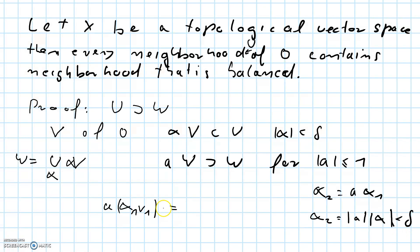And this proves that this element a times alpha one v1 is in w because w was defined as the union over all these sets alpha times v, where the union was taken over the alphas.